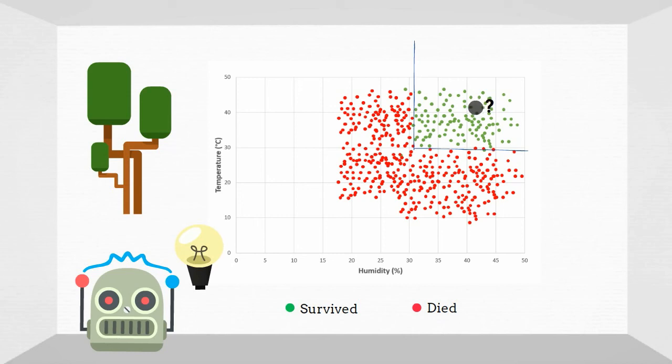Now, when the machine is given a new plant, it can predict whether it would survive or die based on where it falls on the chart.